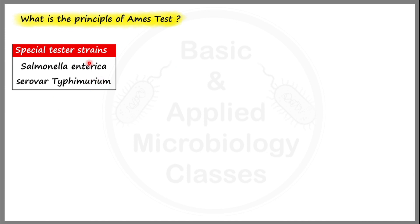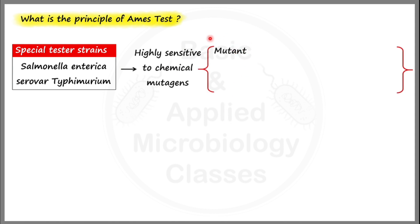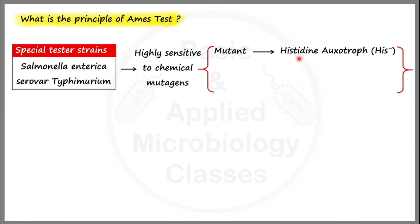These tester strains are called special tester strains because they are highly sensitive to chemical mutagens. They are highly sensitive because they are mutant strains — strains that have been genetically modified in the laboratory. The first level of mutation is done in the histidine operon, modified such that the tester strain will not be able to produce histidine amino acid, which is an essential requirement for their growth. That's why this mutant strain of Salmonella used in the Ames test is called a histidine auxotroph.